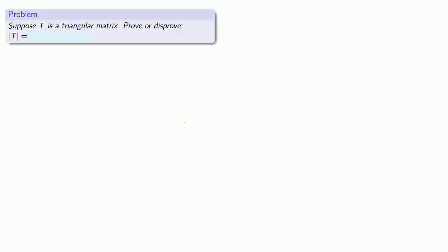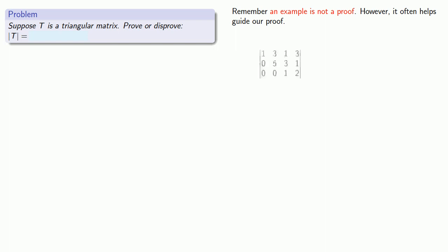Suppose T is a triangular matrix. Prove or disprove that the determinant of T is equal to... let's find out what it is equal to and see if there's an easy way to find the determinant. Remember, an example is not a proof, but it can be used to guide our proof. So let's find the determinant of an upper triangular matrix — for example, this one.